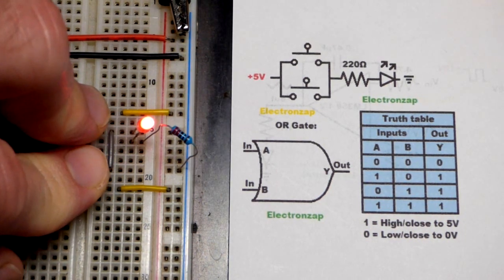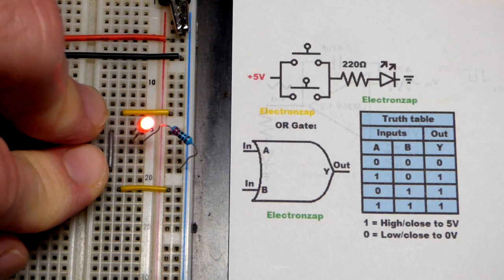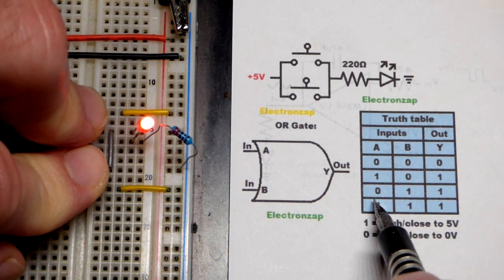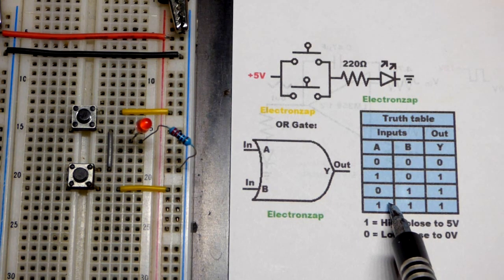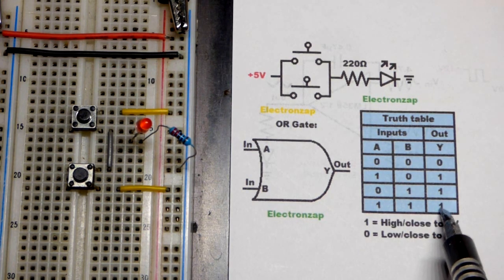The LED in this case will be on. We can press both switches and again we have the state where at least one of them is on for the most part. With the OR gate, they can both be on and the output is on.